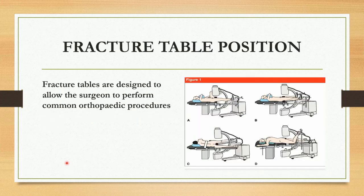The next one is fracture table position, also given inside the operation theater. Fracture tables are designed to allow the surgeon to perform hormone orthopedic procedures. According to the site of surgery, the position will be given on the fracture table. You can clearly see that in the picture.